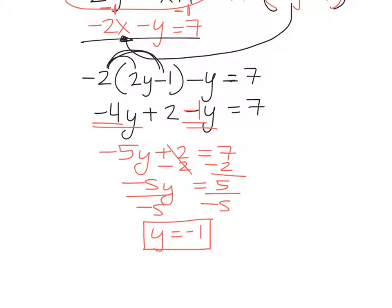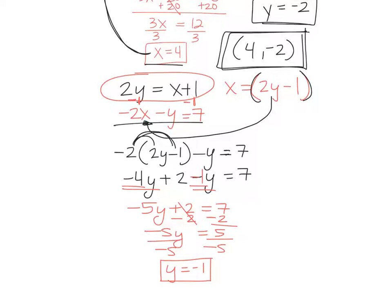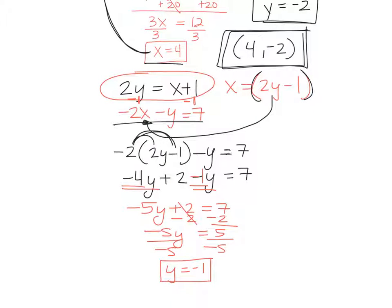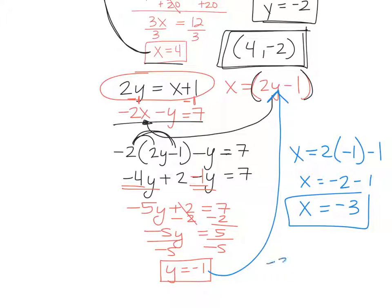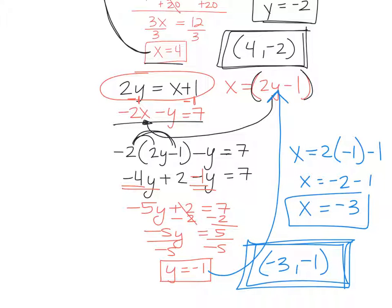How do I find x? How do I figure out what x is? If y is negative 1. Okay. I'll just tell you because the bell rang. You're going to plug it in right there. So x equals 2 times negative 1 minus 1. So negative 2 minus 1. So negative 3. So your answer would be negative 3, negative 1. All right. Have a lovely weekend.